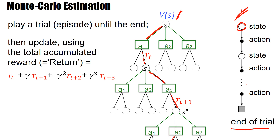Once we have done this, we can see how much return — how much accumulated reward — we got in this episode. Then we play another episode and average over all the episodes that started in state S. This average return, the total accumulated discounted reward, is then a good estimate of the V-value.